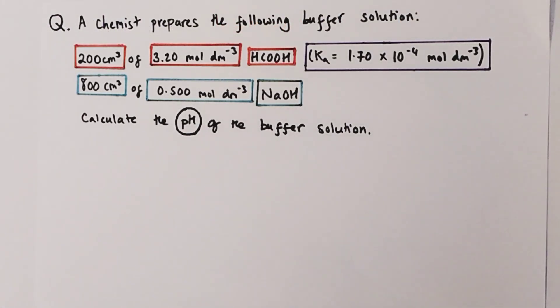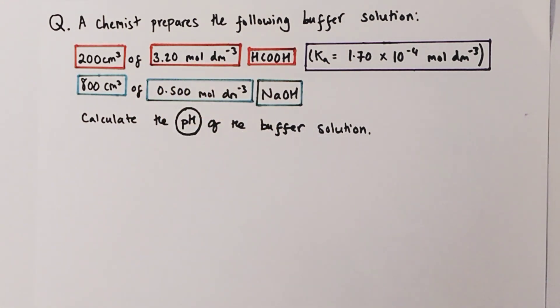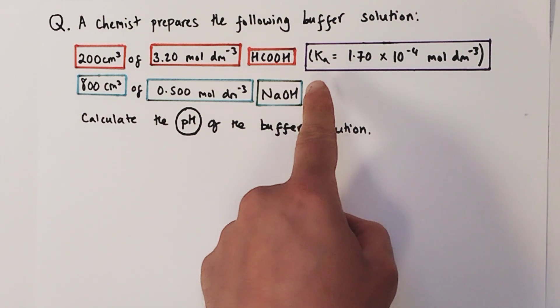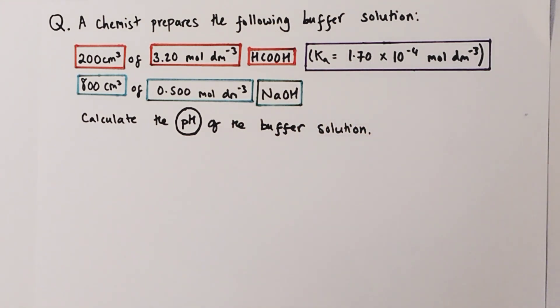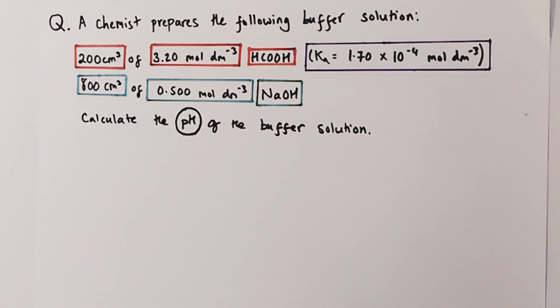Let's work our way through this worked example, this exam style question together. I've colour coded certain chemicals in the question to help track them through the calculation. The chemist is being asked to prepare a buffer solution using 200 cm³ of 3.2 mol per litre methanoic acid, that's our weak acid. The Ka, or the acid dissociation constant for that acid, has been given to us as 1.7 × 10⁻⁴ mol per litre. We've also been told we have 800 cm³ of 0.5 mol per litre sodium hydroxide, that is our strong alkali. We're finally being asked to work out the pH produced by this buffer solution. We're going to tackle this calculation in a step-by-step methodical process.